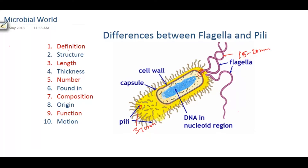The number of pili is numerous in a bacterial cell, whereas if we compare with flagella, it is fewer in number than pili. However, the number of flagella actually depends on the flagellated bacteria — they differ in number based on their types.